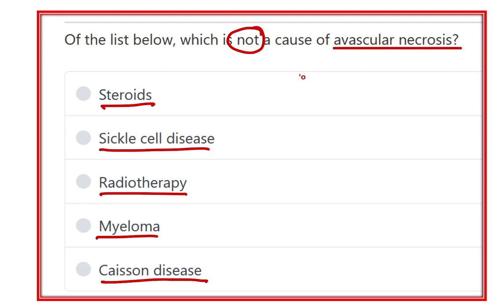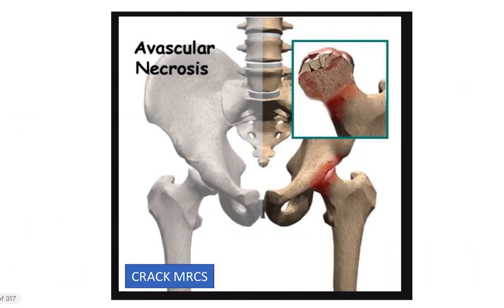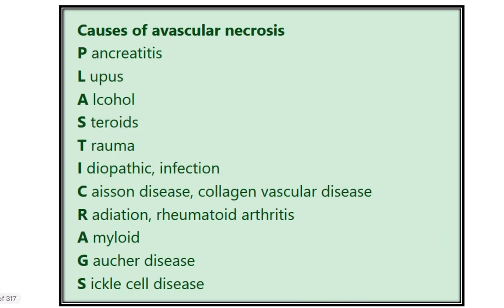In this picture we can see avascular necrosis of the femoral head. The upper part of the femoral head has undergone avascular necrosis, where there is loss of blood supply. The important causes of avascular necrosis are listed here.